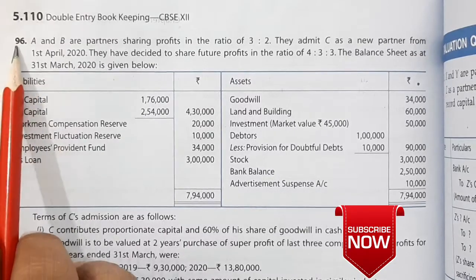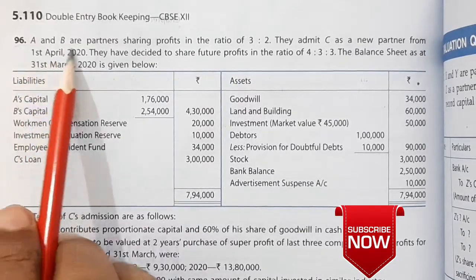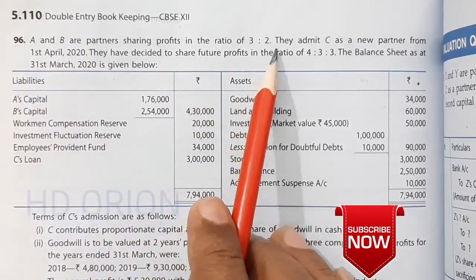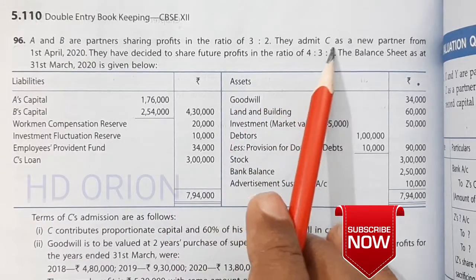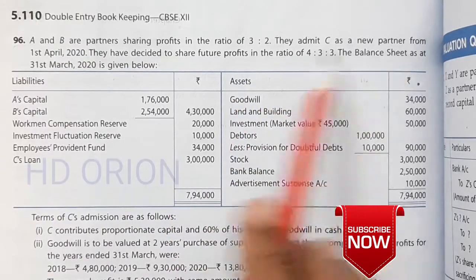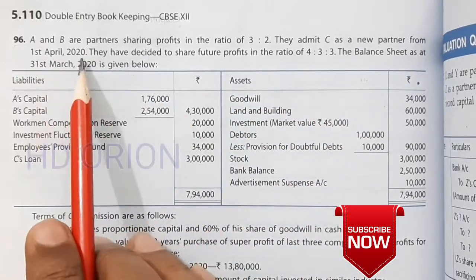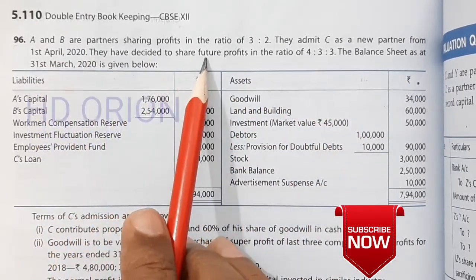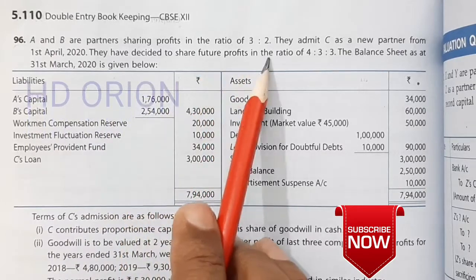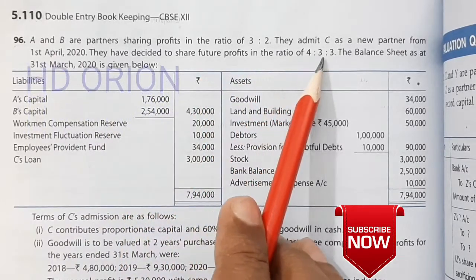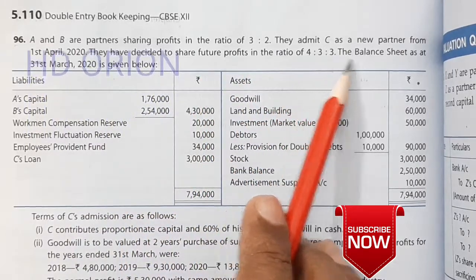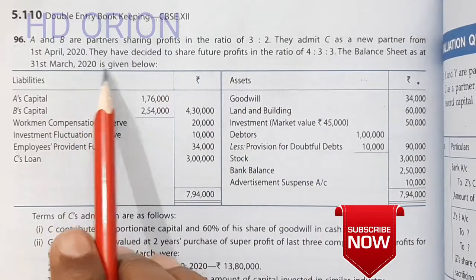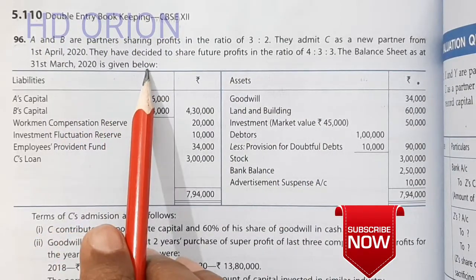Question number 96. A and B are partners sharing profits in the ratio of 3 to 2. They admit C as a new partner from 1st April 2020. They have decided to share future profits in the ratio of 4 to 3 to 3. The balance sheet as at 31st March 2020 is given below.